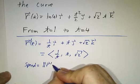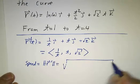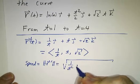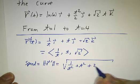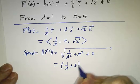This is r prime, and that's the square root of 1 over t squared, plus t squared, plus 2, which is 1 over t, plus t.